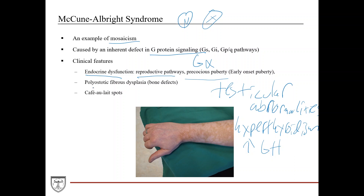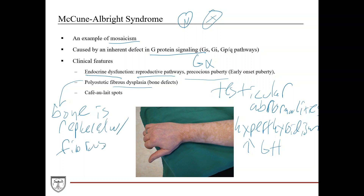Another presentation is polyostotic fibrous dysplasia, which results in bone defects. Fibrous dysplasia is where bone is replaced with fibrous tissue, which is much weaker. As a result, you have weak bones, which can lead to growth problems and skeletal deformities. In the long bones this can cause problems with gait — patients can even have a limp. It can also appear in the facial bones, causing facial abnormalities.